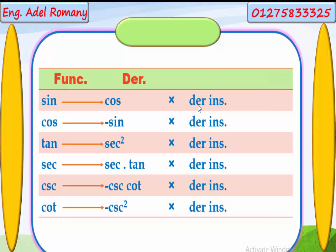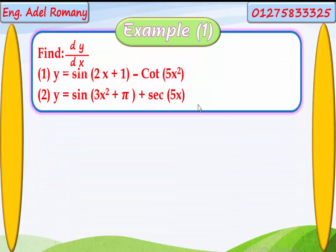Let's see an example. Find dy over dx. Problem 1: y equals sin(2x plus 1) minus cot(5x squared). We have two trigonometric functions to differentiate.